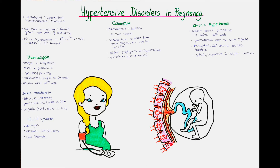Another cause for placental ischemia is an underlying maternal vascular disease such as chronic hypertension or an immunologically mediated placental vascular damage. Also, having multiple babies at the same time, as in twin pregnancies, increases the workload of the placenta and so can lead to ischemia. Uteroplacental ischemia leads to oxidative stress, which in turn leads to the production of toxins and mediators that enter the maternal circulation and cause inflammation, endothelial dysfunction and activation of the coagulation system.